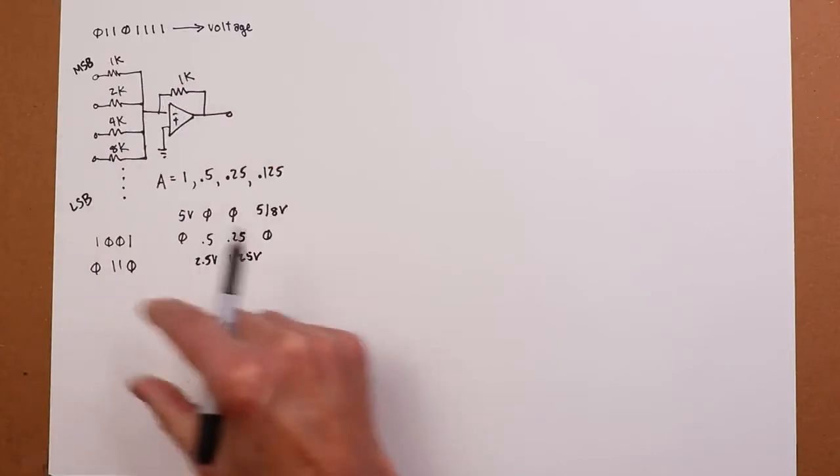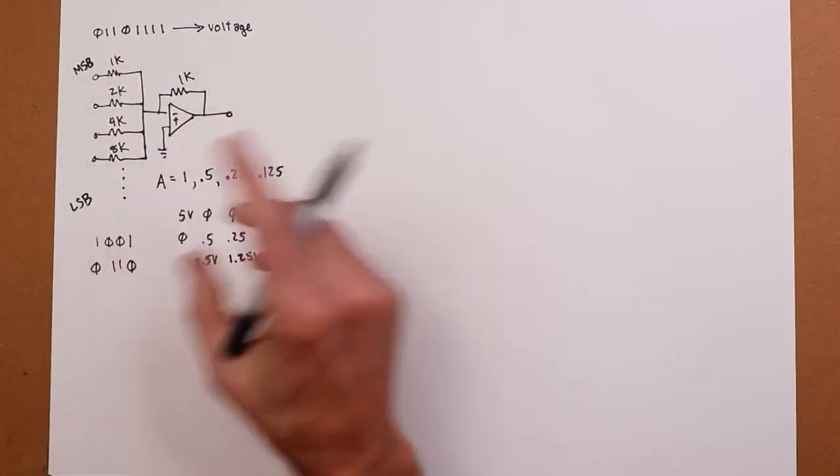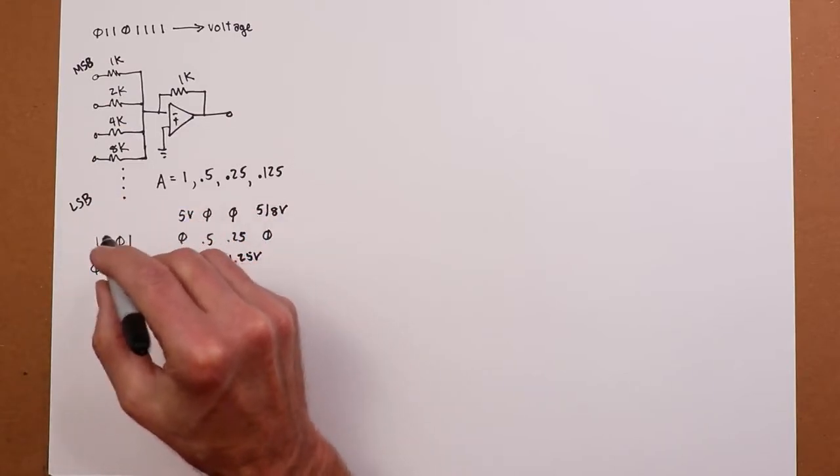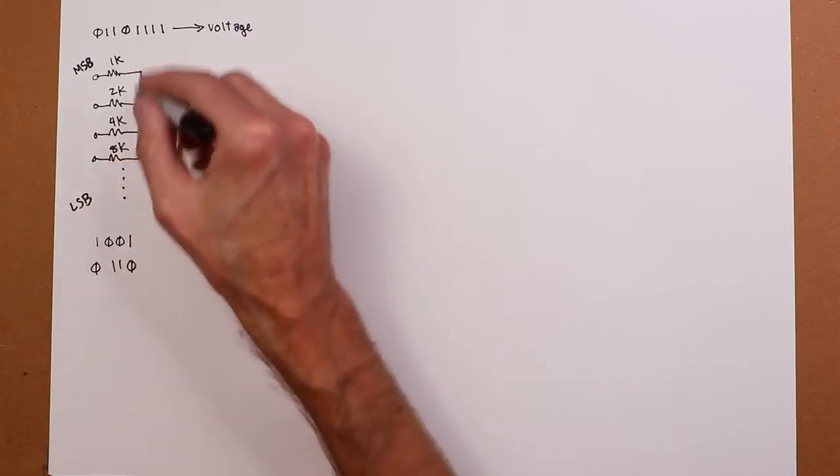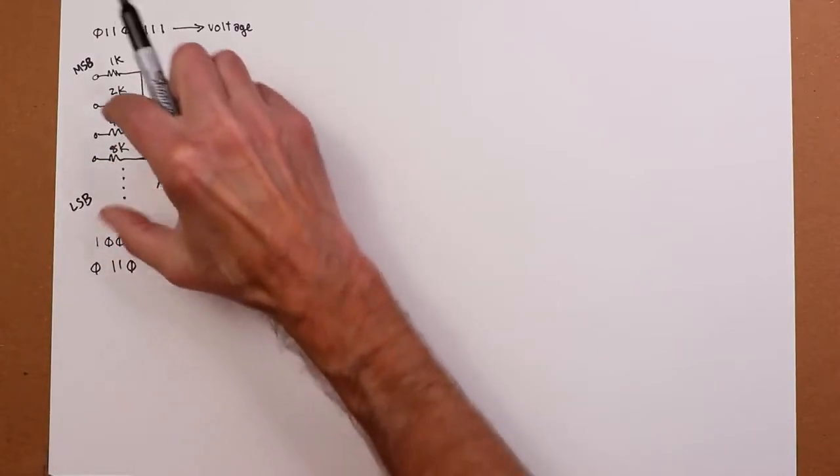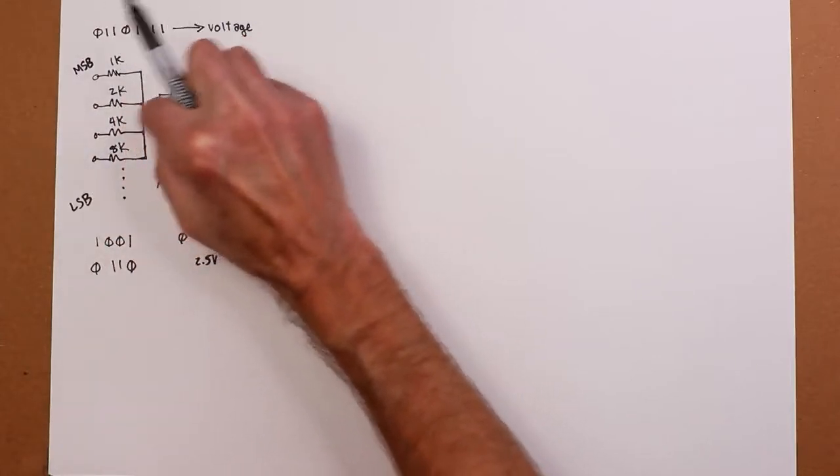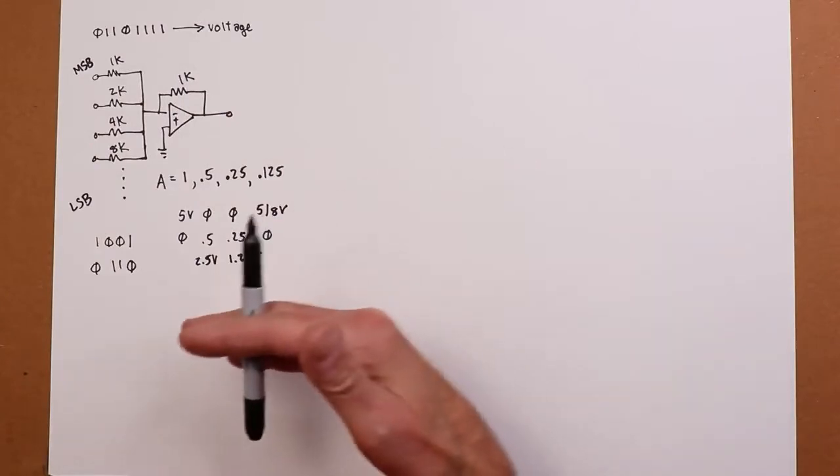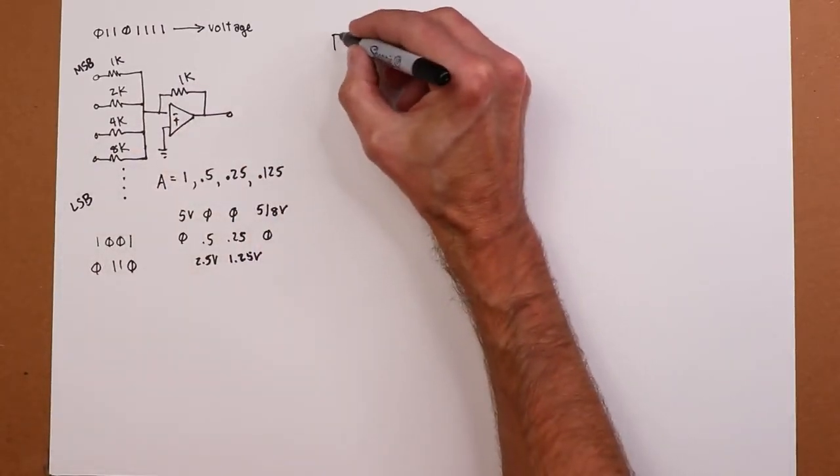Problem with this is, if you have a lot of bits, these values get huge. If you had a 16-bit system, that top value is going to be over 65 mega-ohms. It's not very practical. You have issues with the accuracy of these resistors, leakage currents, bias currents, things like that are going to throw you off. So there's a nicer way to do this, and that's through the use of an R2R ladder network.